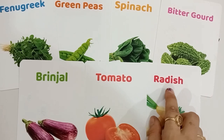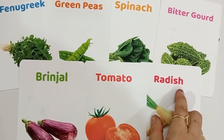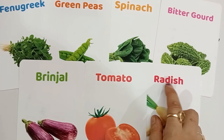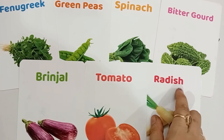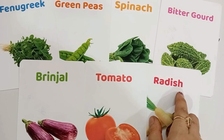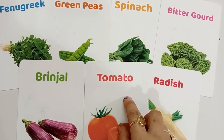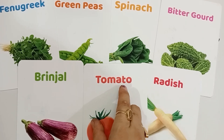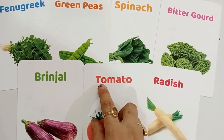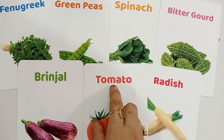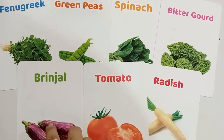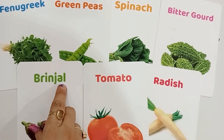R for Radish, R-A-D-I-S-H, Radish. T for Tomato, T-O-M-A-T-O, Tomato. B for Brinjal.